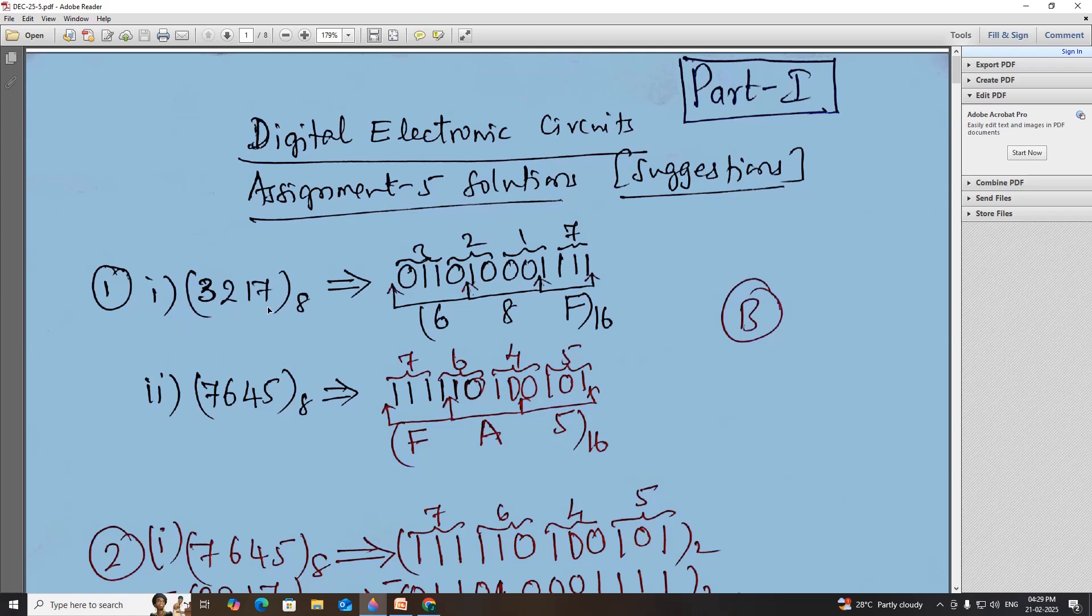First question: the hexadecimal representation for 3217 and 7645, both in octal number system. We have to convert that into hexadecimal. So 3217 is written in binary, now consider 4 binary digits. This equals F, and 1000 is 8, 0010 is 2. You can convert 7645 likewise. First convert octal to binary, then binary to hexadecimal. So 68FFA5, option B.